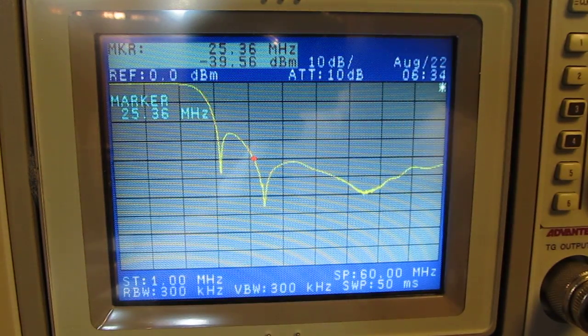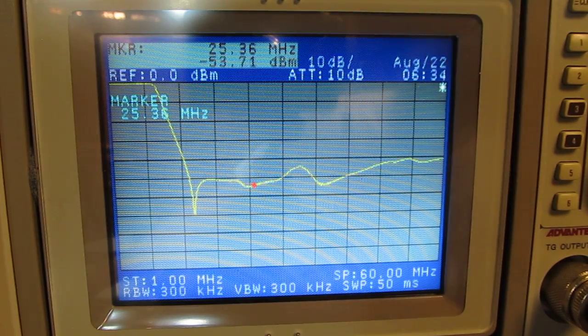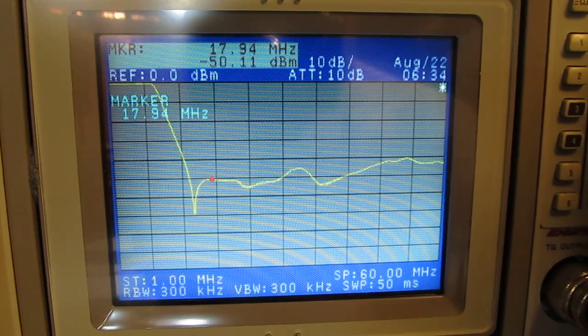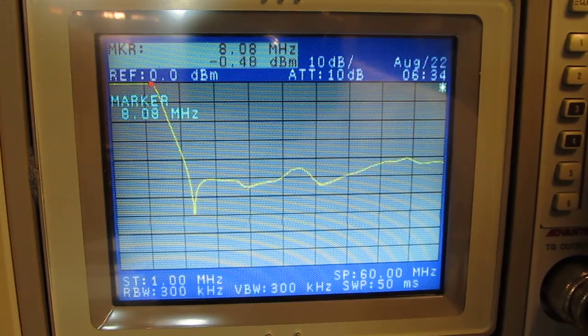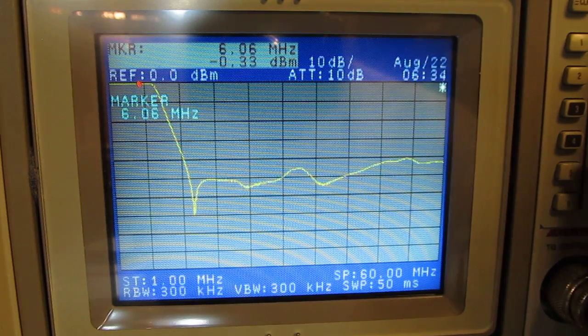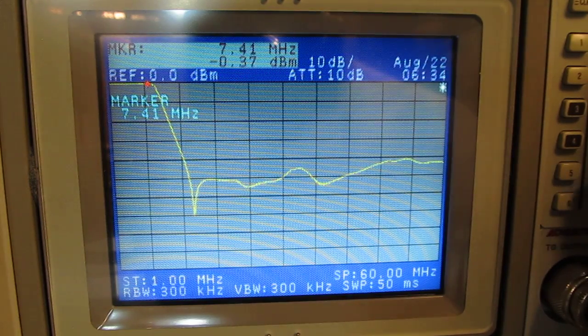Let's go to the next filter selection. This is now the 40 and 60 meter band. 60 meters is about 5 megahertz and we can see up there we're okay there. 40 meters is about 7 megahertz so we're okay there as well.